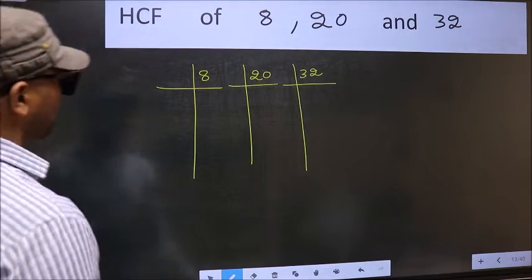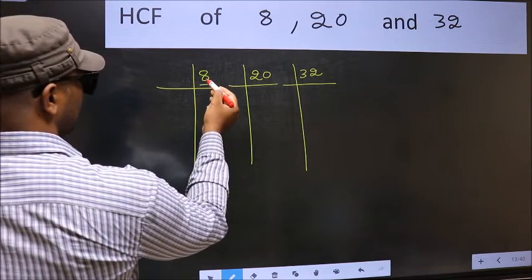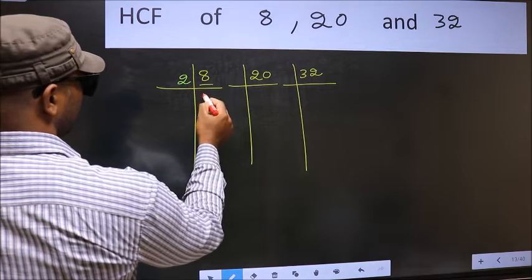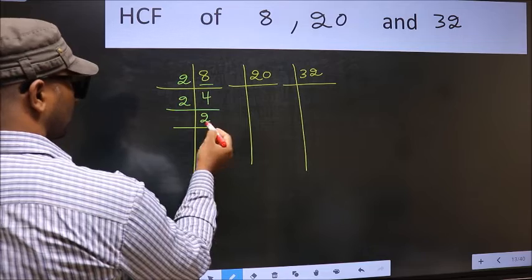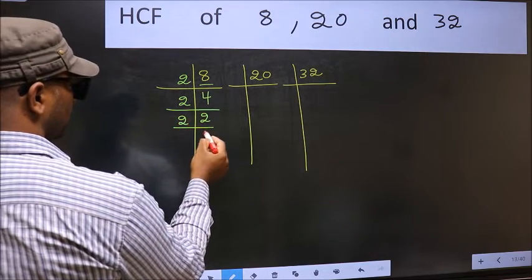Next. Now here we have 8. 8 is 2 times 4. 4 is 2 times 2. Now 2 is a prime number, so 2 times 1.